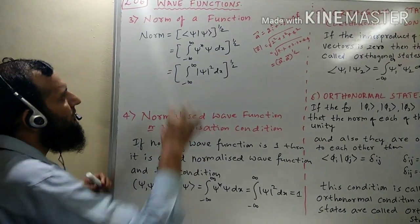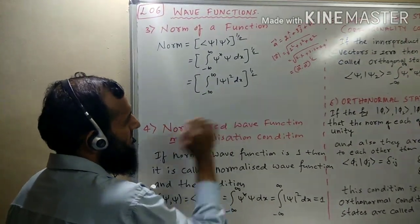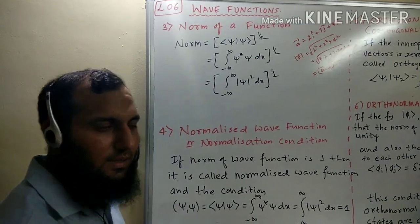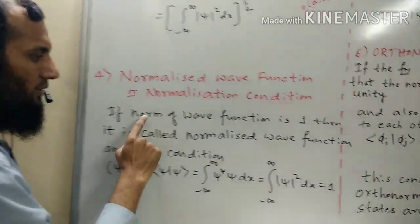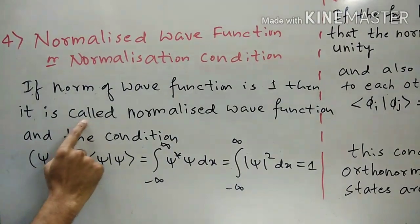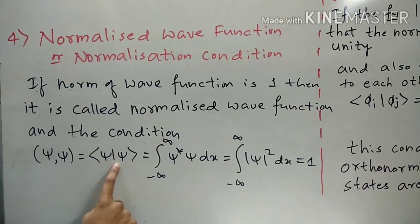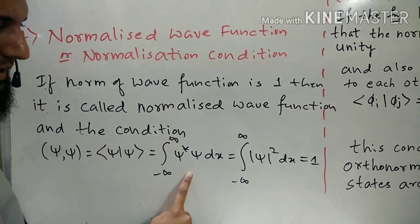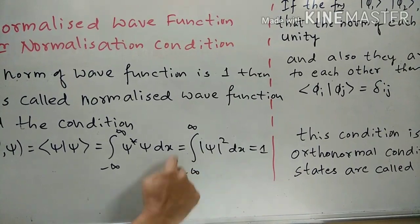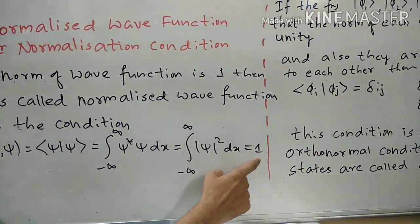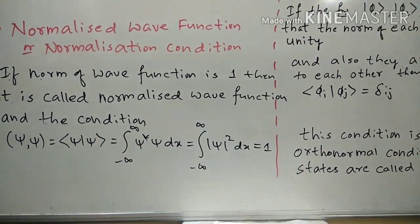Next, suppose when we find the norm of a function it comes out to be 1. If the norm of the function is equal to 1, then that kind of function is called a normalized wave function. The condition — that the inner product of psi with itself equals 1, whether written in Dirac notation, integral notation, or the bound interpretation — if it turns out to be 1, then that function is called a normalized wave function, and this condition is called the normalization condition.